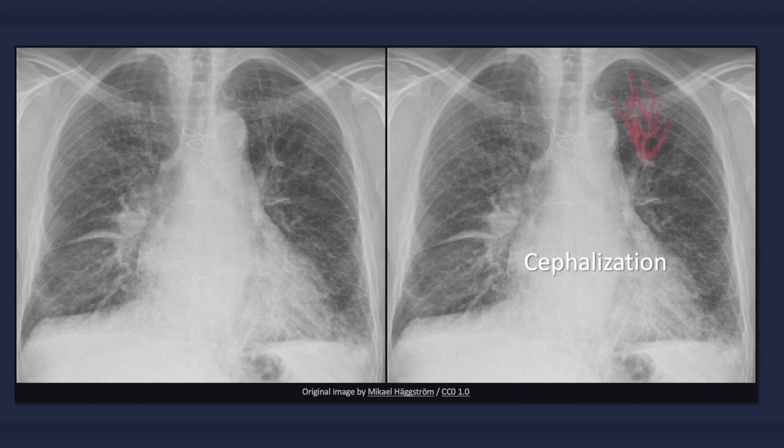Vascular redistribution is one of the first signs of congestive heart failure. Increased blood flow to pulmonary vessels in the upper lung zones results in an increase in size relative to blood vessels in the lower lung zones. This caudal-to-cranial redistribution of blood flow should only be inspected for in an erect X-ray, since equalization of blood flow may occur in the supine position. The finding of upper lobe blood diversion can be difficult to appreciate on a plain radiograph.